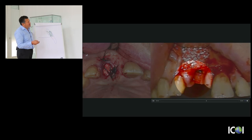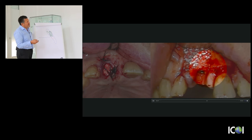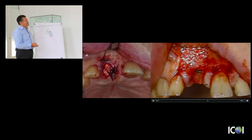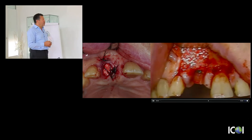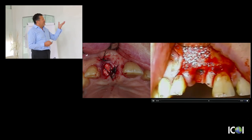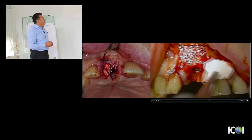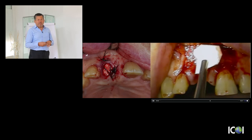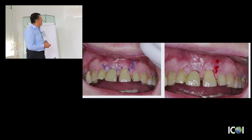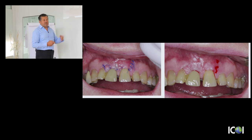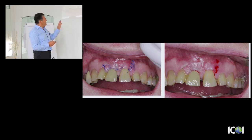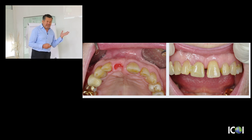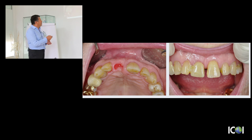The soft tissue harvested with the punch will be used as a connective tissue graft to improve the soft tissue so the crown will have a very natural look. The flap is closed with double sling sutures using 5.0 suturing material, everything back in position. Sutures are removed early, and we have a very good follow-up with excellent volume maintenance.